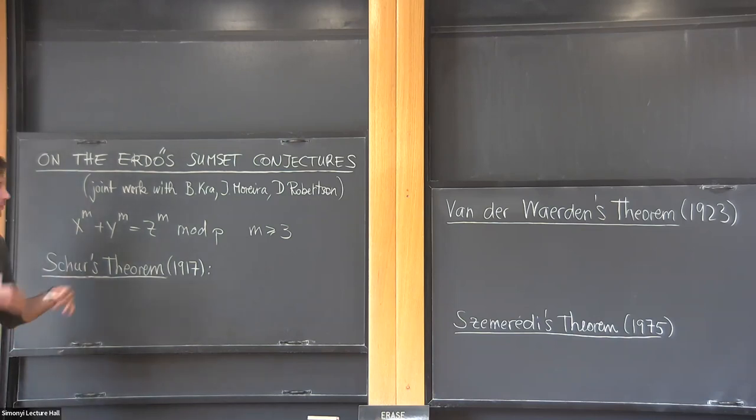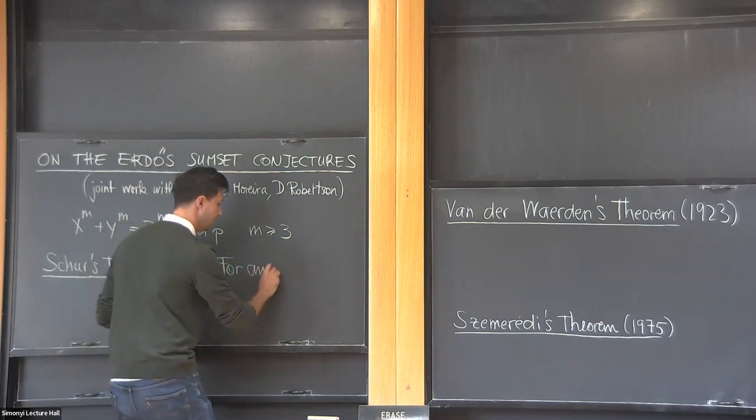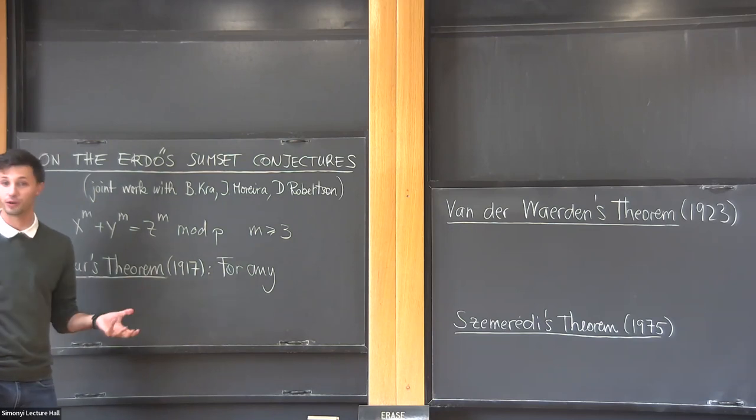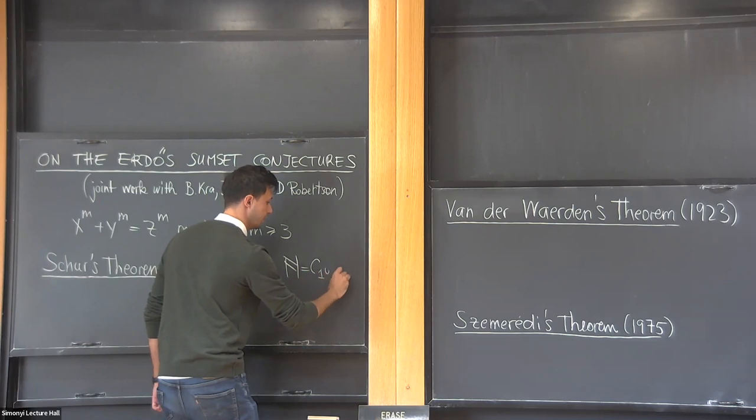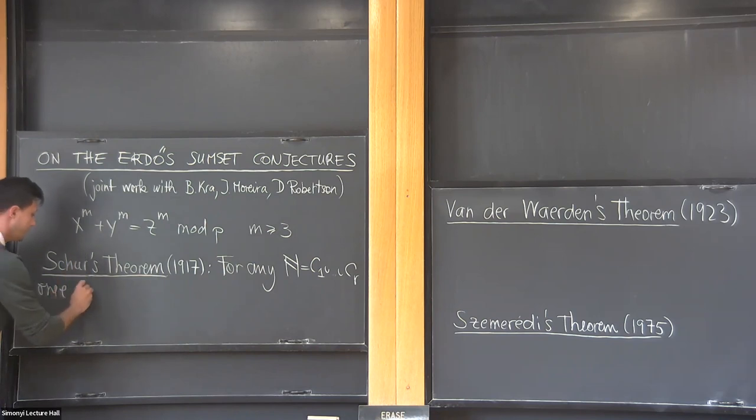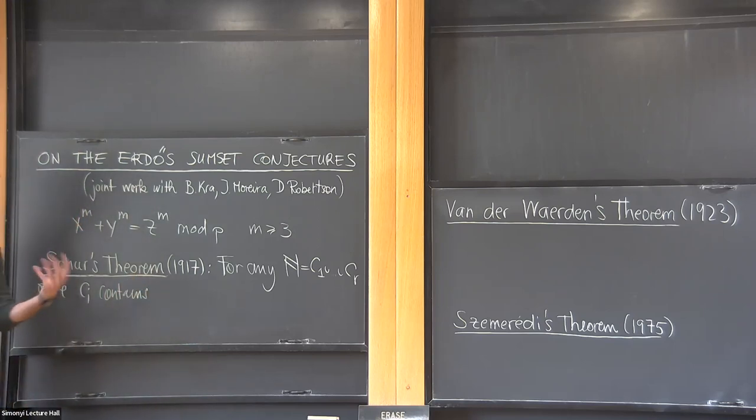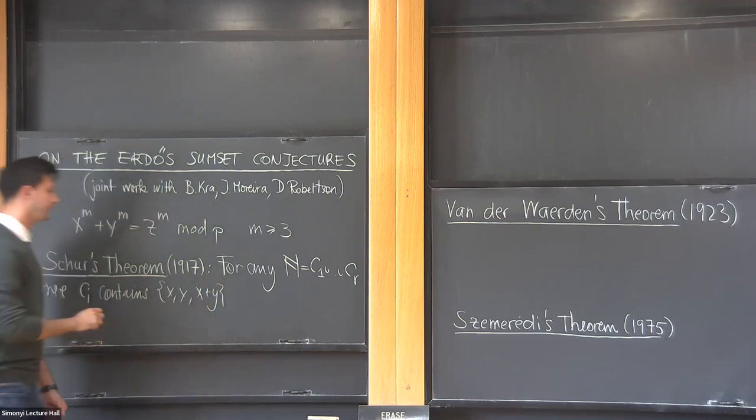It has to do with colorings. For any finite coloring of integers—and I think of a finite coloring just as a finite partition—into r many cells, one of these cells contains a solution to the equation x plus y equals z, or another way of saying that is it contains x, y, x plus y.